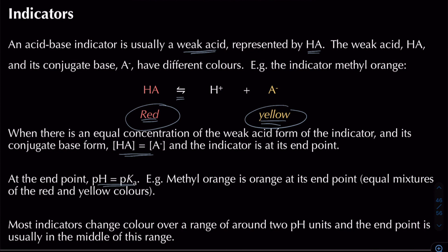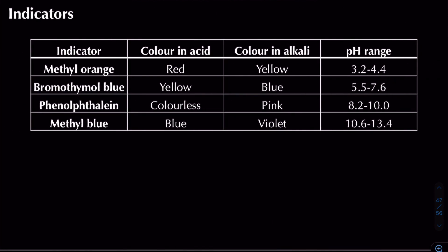Indicators change colour over around two pH units, with the end point usually in the middle of this range. Some examples you need to be familiar with: methyl orange is red in acid, yellow in alkali, with a pH range of 3.2 to 4.4. Phenolphthalein is colourless in acid, pink in alkali, with a pH range of 8.2 to 10. Different indicators have different pH ranges.